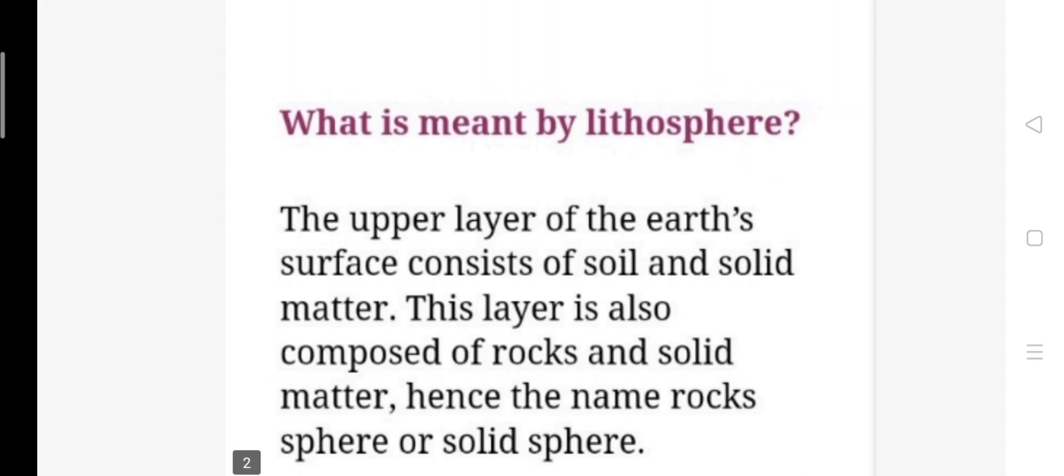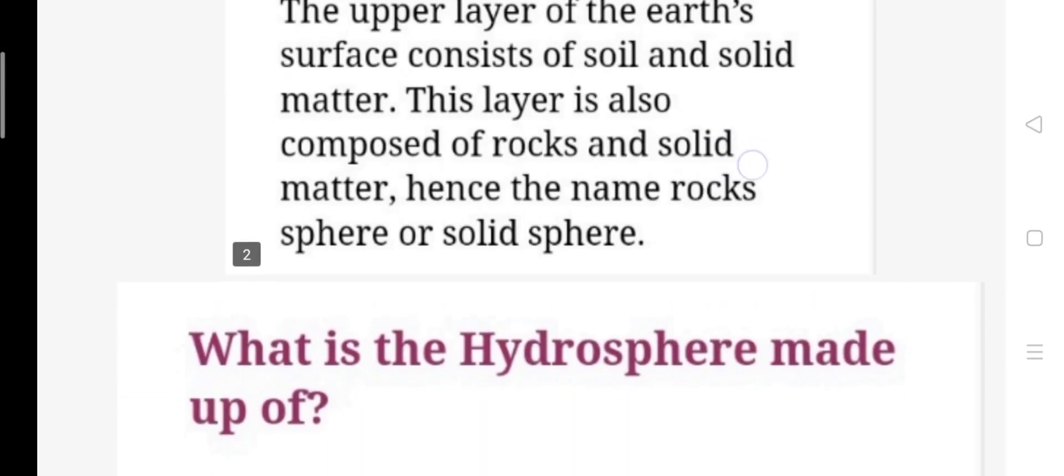Next question: What is meant by lithosphere? Answer: The upper layer of the earth's surface consists of soil and solid metal. This layer is also composed of rocks and solid matter, hence the name rock sphere or solid sphere.